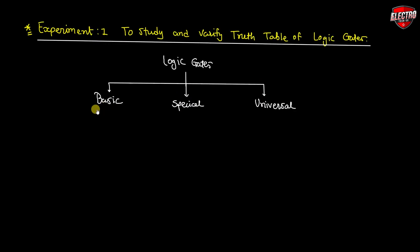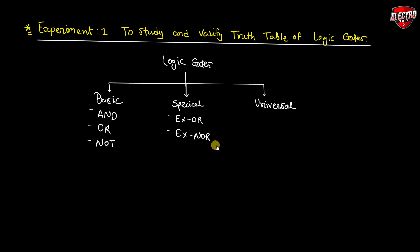In basic logic gates, we have three gates: AND, OR, and NOT. In special logic gates, we have XOR and XNOR, which are also known as derived gates because they can be derived with the help of basic gates. And in universal gates, we have NOR and NAND gates.